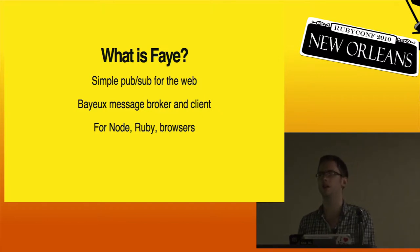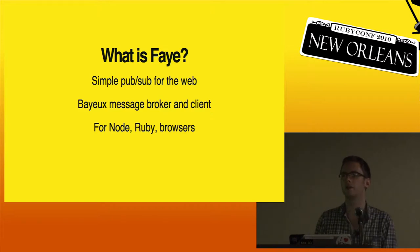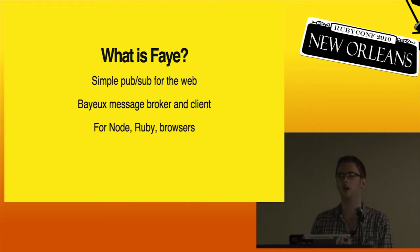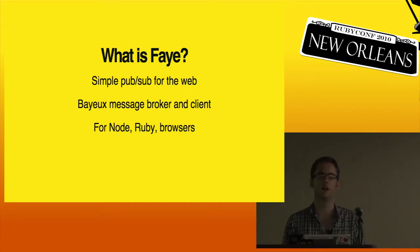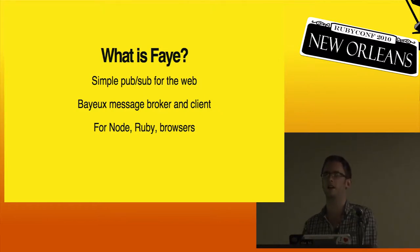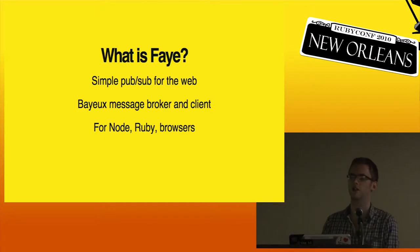One thing I get asked pretty frequently is why do we need Fay. We've got WebSockets almost everywhere now if we ignore Internet Explorer. But Bayeux does a bunch of nice stuff for you. It has a routing scheme built in so you don't have to keep track of which sockets belong to which clients. You just use its channel system to publish stuff and it routes all the messages to the right places. It deals with automatic reconnection if your socket drops out, and it falls back to long polling on Firefox 3.6 and IE, which don't have WebSockets.